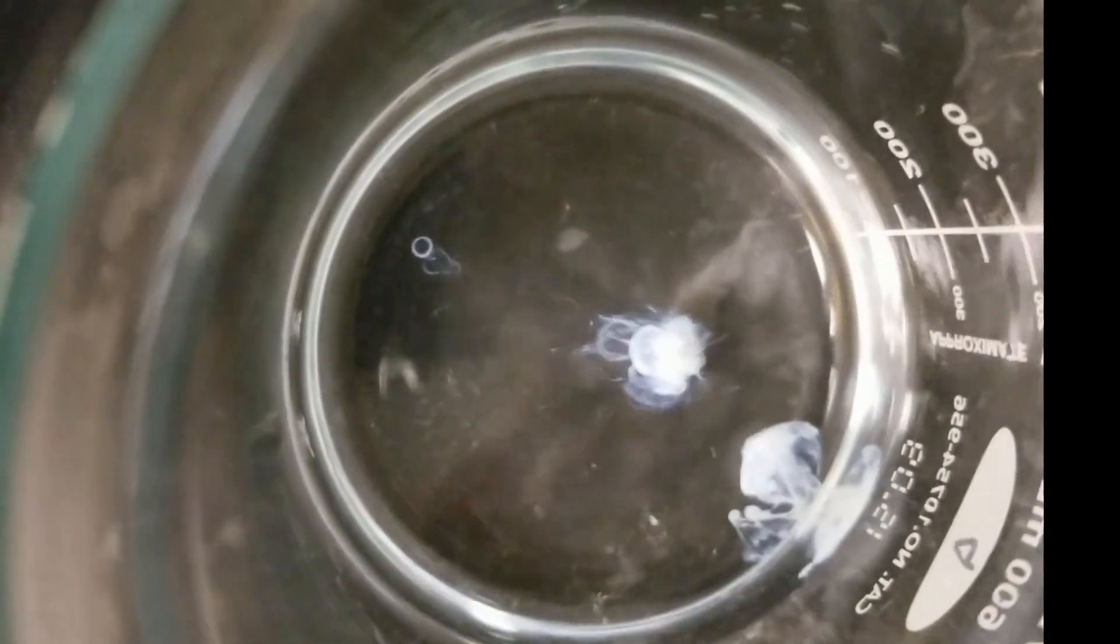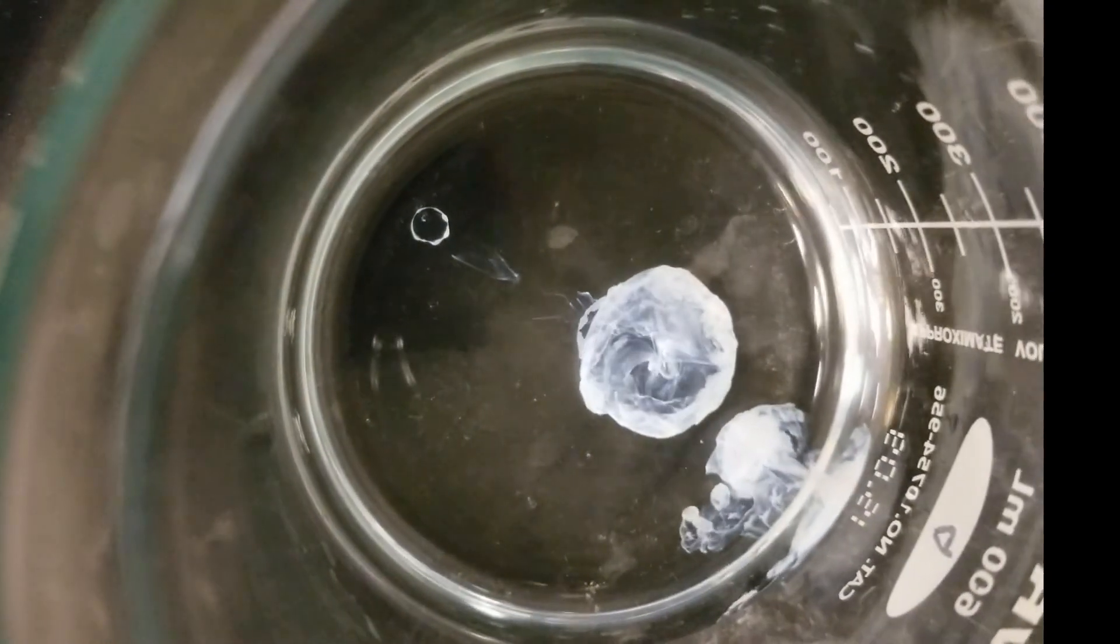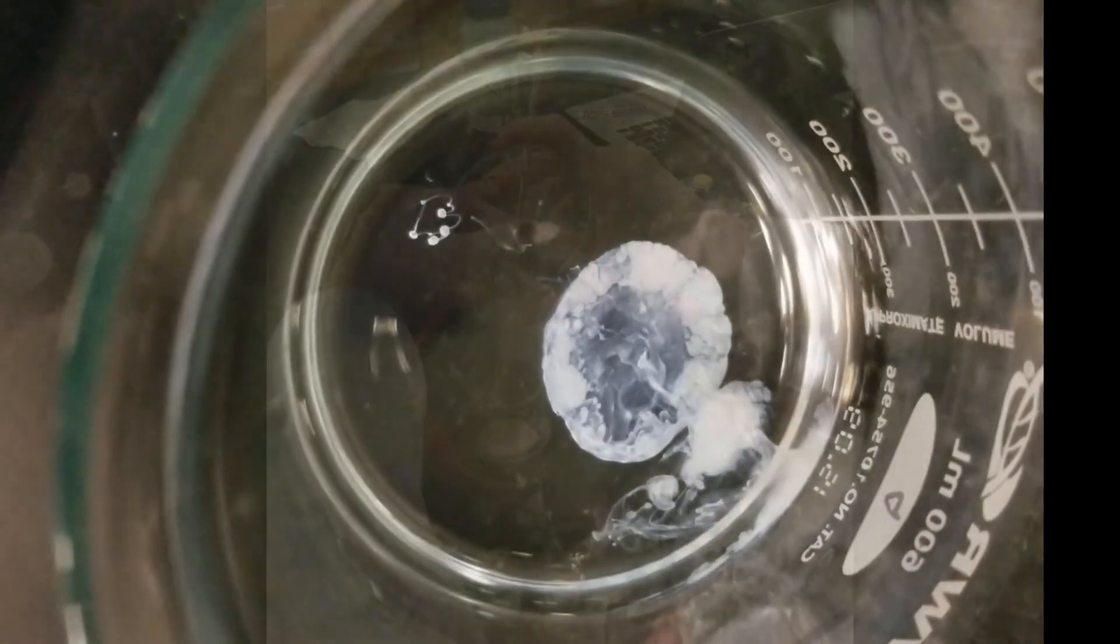Next, test your solution for free chloride ions by dropping in a few drops of silver nitrate. If you see a cloud like this, you'll need to digest more.